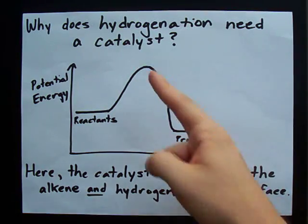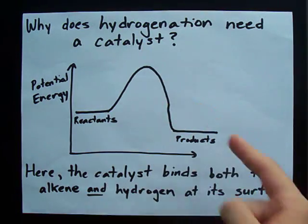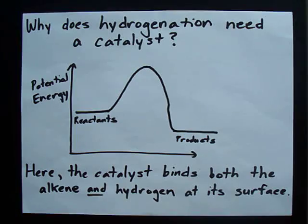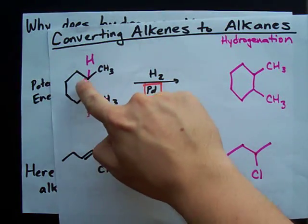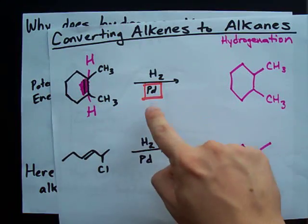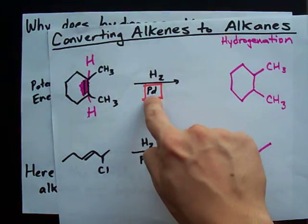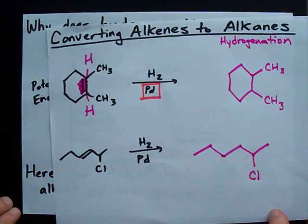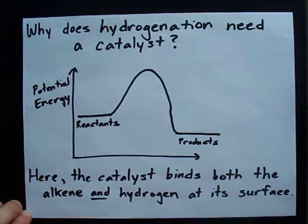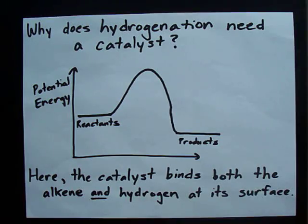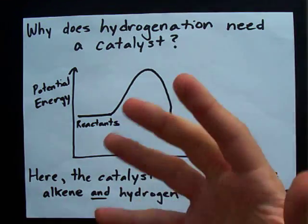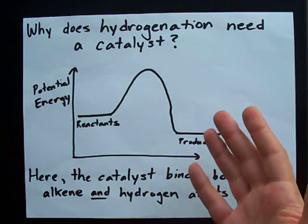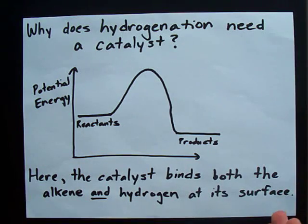Quick question: why do you require a catalyst for hydrogenation? When you're adding hydrogen across an alkene or a double bond, why do you need this metal here to act as a catalyst? Well, long story short, the catalyst is there to reduce the amount of energy required for the reaction to happen.